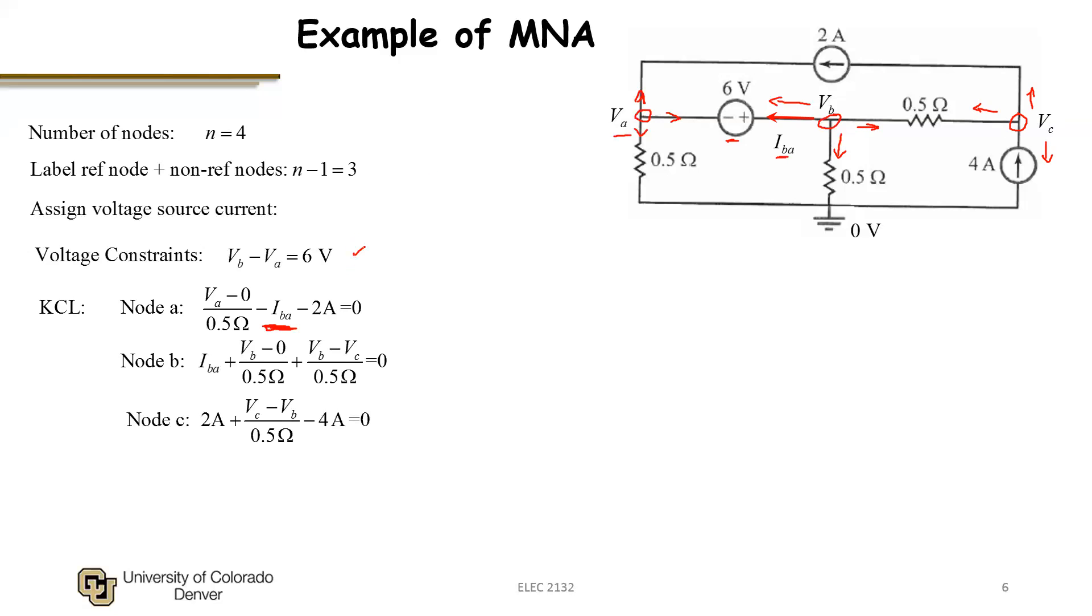So at this point, now I have one voltage constraint corresponding to one voltage source, three KCL equations corresponding to three node voltages. And therefore, I have 3 plus 1 or a total of 4 equations for my 4 unknowns. That gives me enough equations to solve uniquely for the node voltages and the source current.